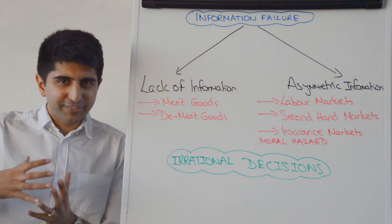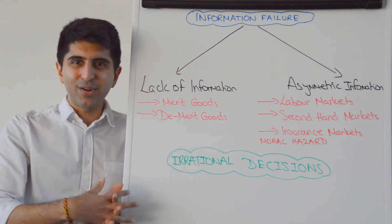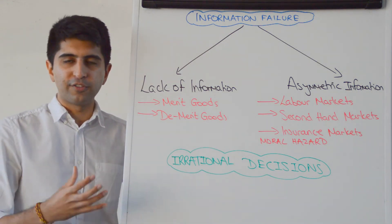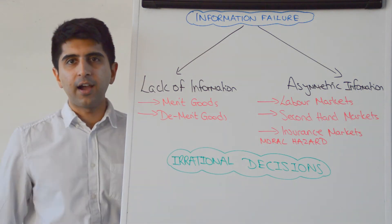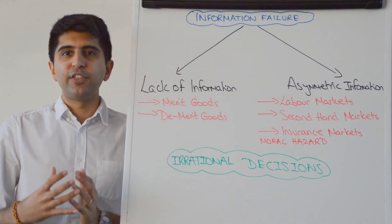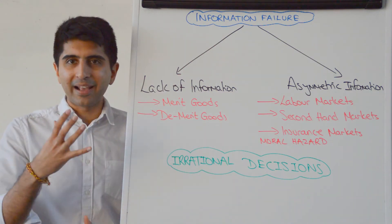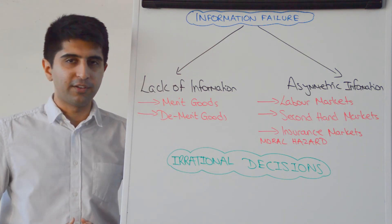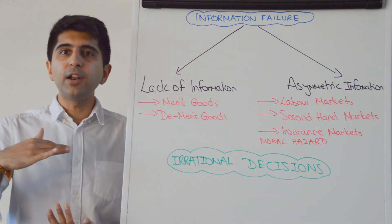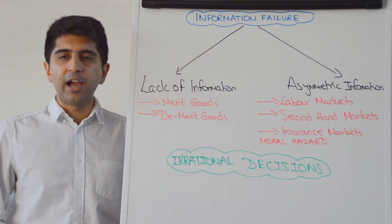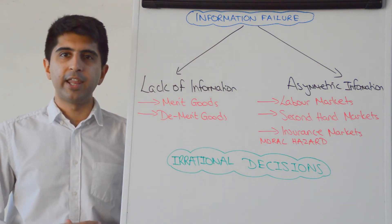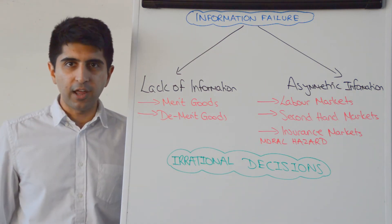The insurance company is desperately trying to get all the information out of the car driver and therefore put a price on insurance for that car driver. But it's very difficult for the insurance company to get the full information as there is asymmetric information. For the individual, there is always an incentive to under-report the level of risk — to under-report how dangerous a driver they are — to keep the price of insurance low.